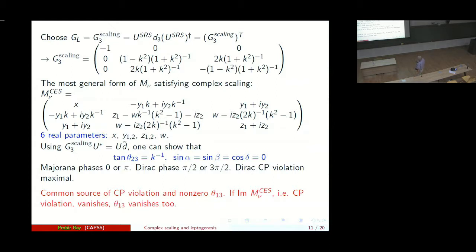So we have where one can show that tan 2 theta_23 is still K inverse, but sin alpha, sin beta and cos delta have all vanished. That means the Majorana phases have to be 0 or pi, whereas the Dirac phase is pi by 2 or 3 pi by 2, which is very encouraging because there is a hint from the latest experiment that Dirac phase is close to 3 pi by 2.